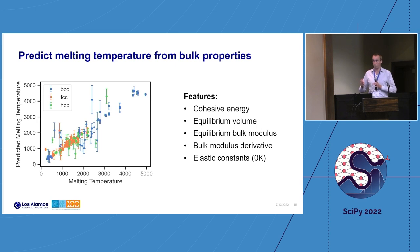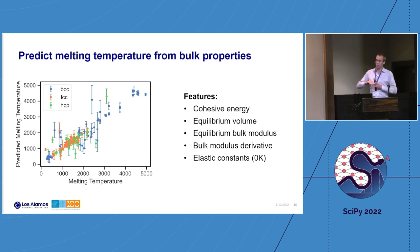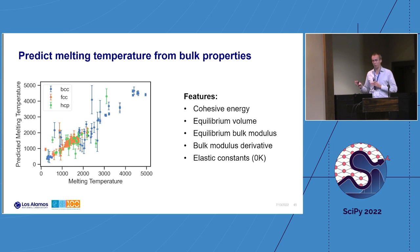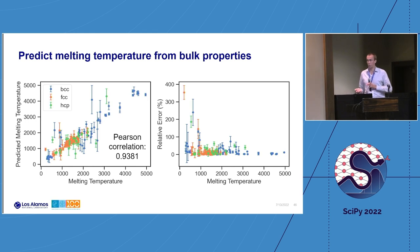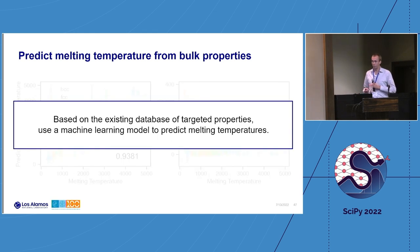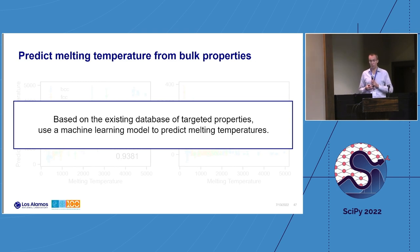Once we have this kind of highly specialized dataset, we train a machine learning model — here a simple decision tree — to see if we can learn the melting temperature already from bulk properties. The model shows a nice correlation but has trouble particularly with lower-temperature melting. Building a targeted database for specific properties and applying machine learning to filter out correlations is really one of the strengths of our solution.